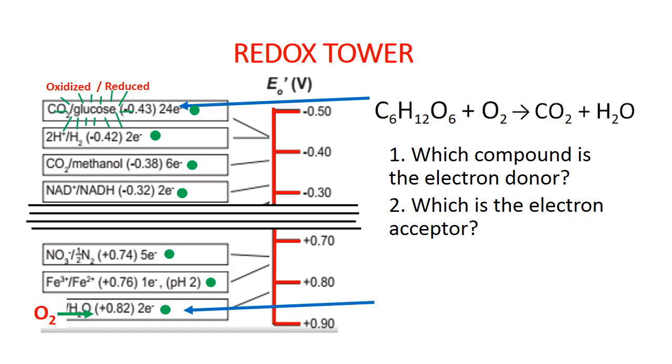So when oxygen here accepts electrons from glucose, which oxygen wants to do not just because it's at the bottom of the tower, but also because it is below the glucose half reaction, it will become reduced, forming water.